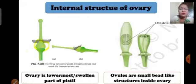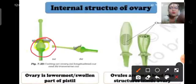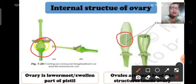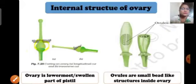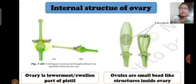Now we will study about the ovary. Ovary is the lowermost swollen part of the pistil. If you open the ovary, you will notice small bead-like structures inside — these are called ovules. You can see these small bead-like structures inside the ovary — we call them ovules.